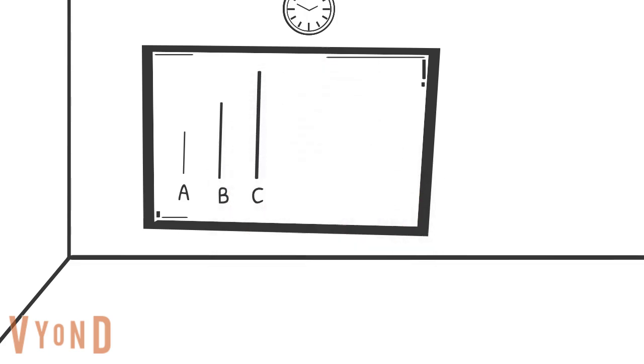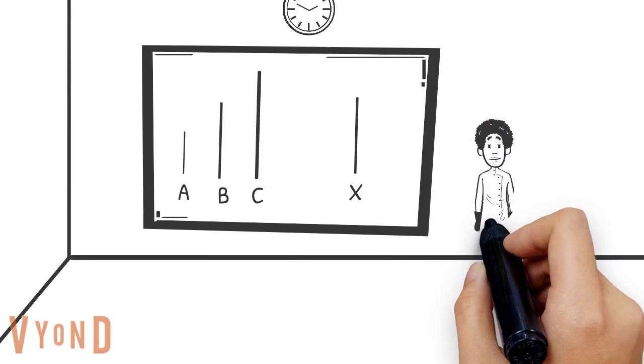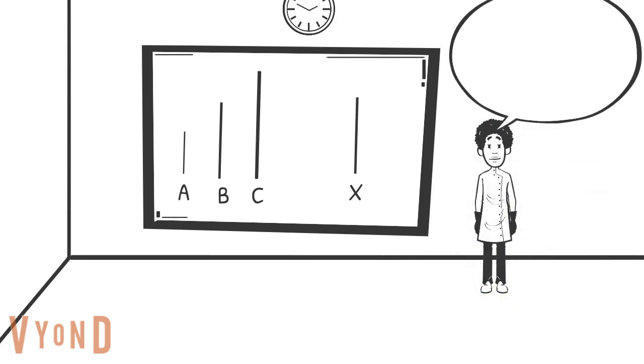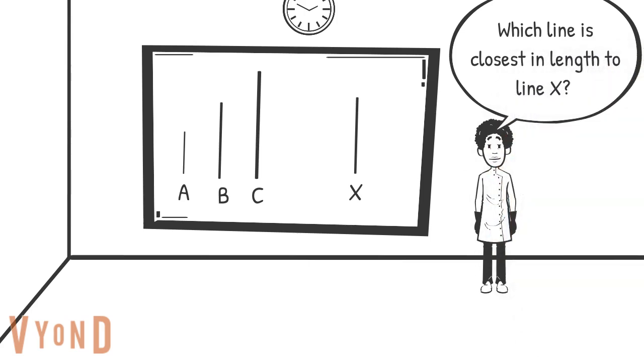Asch's study started by taking people into a room where they were video recorded. He would initially tell them that they are taking a visual perception test. He would ask them to identify whether line A, B, or C was closest in length to line X. Seems pretty easy, right? I'm sure you can tell in this example that line B is the correct answer.